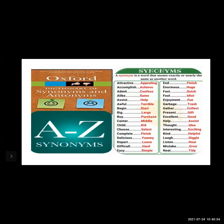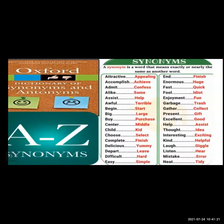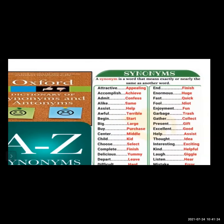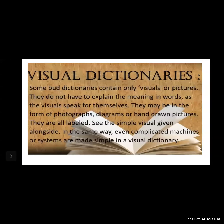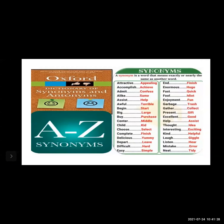Next is the synonyms dictionary. A synonyms dictionary gives us the meaning of alternative words — words having the same meaning. For example: admit and confess, alike means same, assist means help, awful and terrible, begin and start, big and large. So this dictionary contains words along with other words that have the same meaning, which is why it is called a synonyms dictionary.